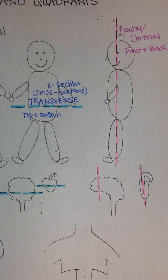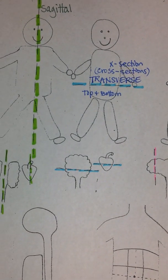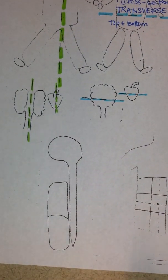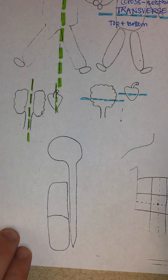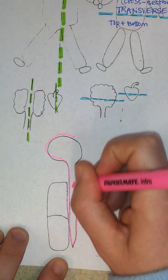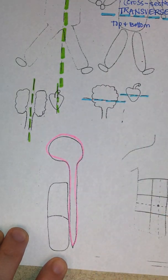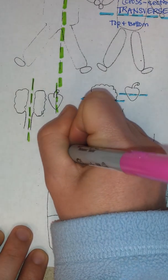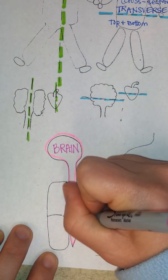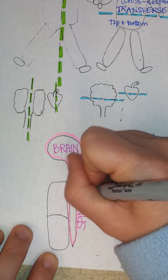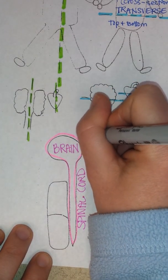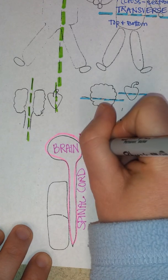Now let's look at some cavities and quadrants that sometimes you hear the body divided up into. Just keep that pink highlighter and you can outline this diagram. This represents the brain and the spinal cord. Everything in pink there is referred to as the dorsal cavity.